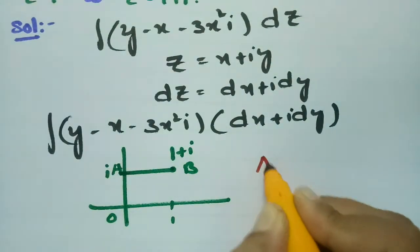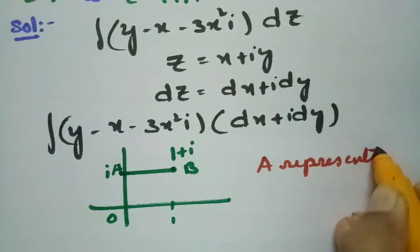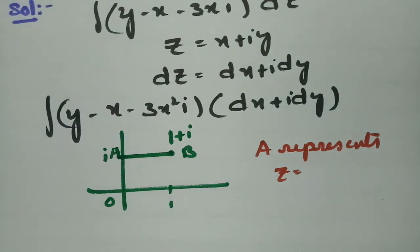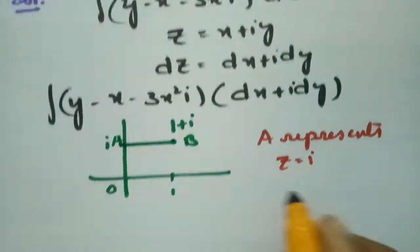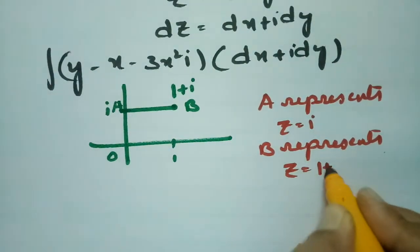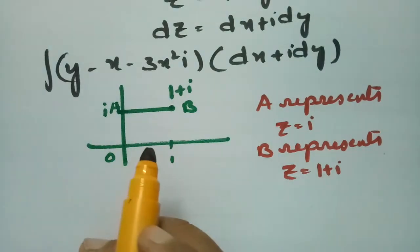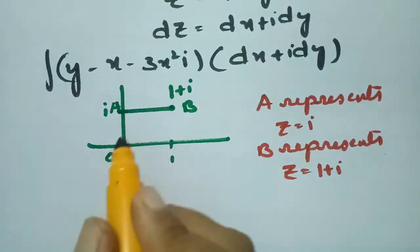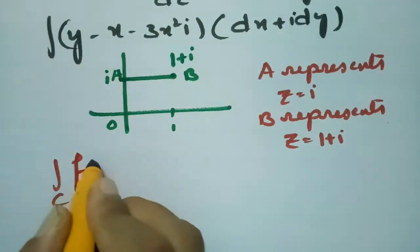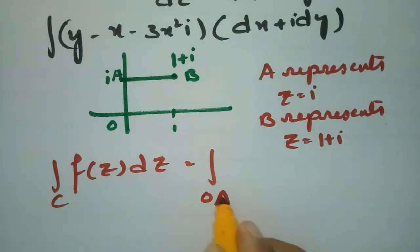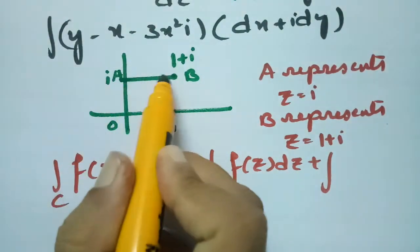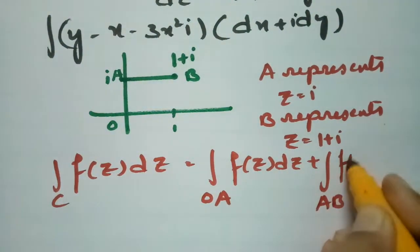Let A represent z=i (the segment from z=0 to z=i) and B represent z=1+i. The curve C is a combination of path OA and path AB. So the total integral equals the integral along OA plus the integral along AB.